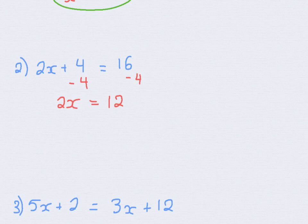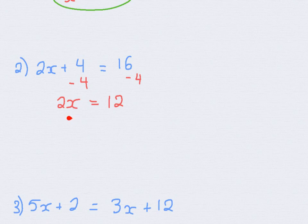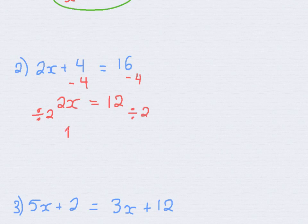So if we rewrite what we have so far, we are left with 2x, because 4 minus 4 is 0, and that's equal to 16 minus 4, which is 12. Are we done? We are not done, because we have this 2 that's attached to the x. What operation is making the 2 stuck to the x? It's multiplication. The opposite of multiplication is division, so we are going to divide this side by 2, and we do 12 divided by 2 on the other side. Because 2 divided by 2 is 1, we are left with 1x, or simply x, is equal to 6.